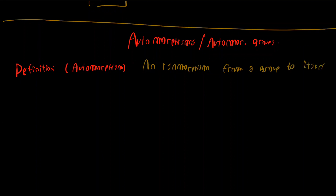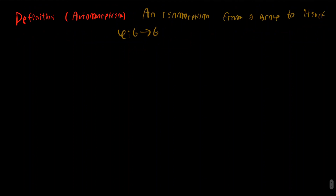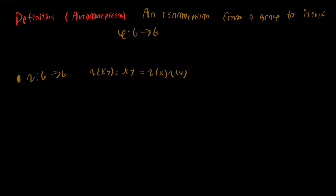An automorphism is basically an isomorphism from a group to itself: a bijective, operation-preserving function φ: G → G. A simple example is the identity function from a group to itself — it's bijective, and it's operation-preserving because the identity of (x·y) is just x·y = id(x)·id(y).